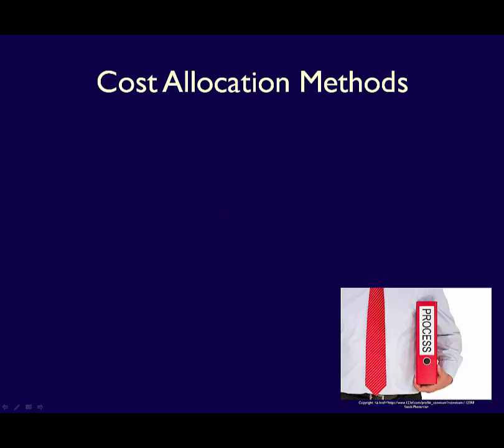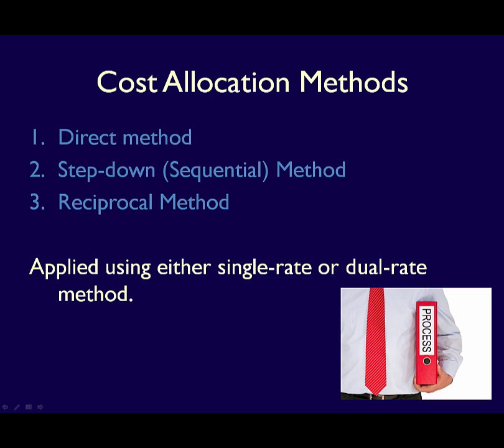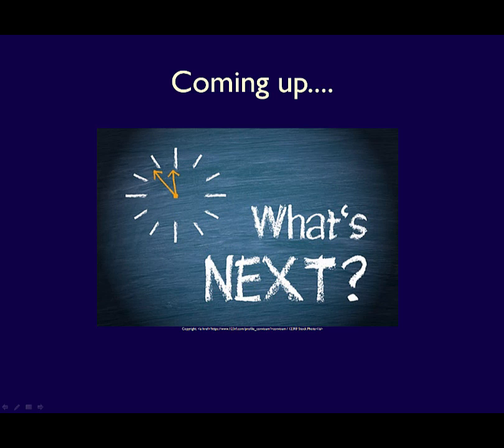Once a cost driver is chosen, there are three methods to allocate service department costs: one, the direct method; two, the step-down method, also called the sequential method; and three, the reciprocal method. Each can be applied using either a single rate or a dual rate method. Over the next few videos, I'll demonstrate all three methods using the single rate method, showing how to apply each one and discussing the pros and cons. I'll also do a comparison so you can understand the impact on the company's decisions.